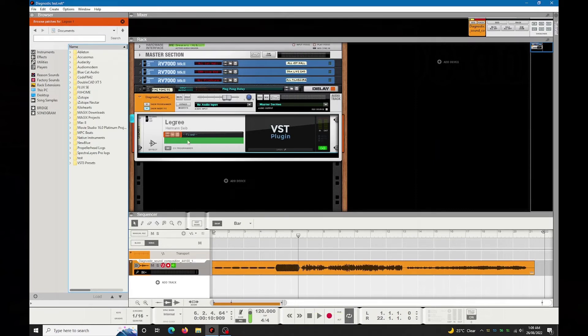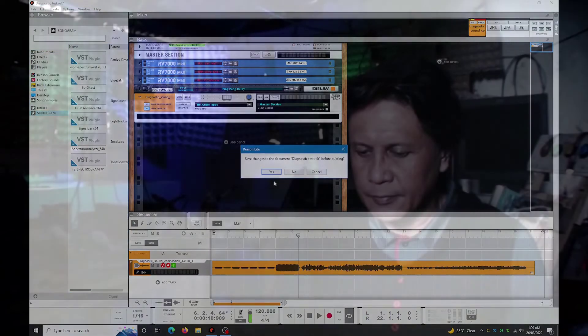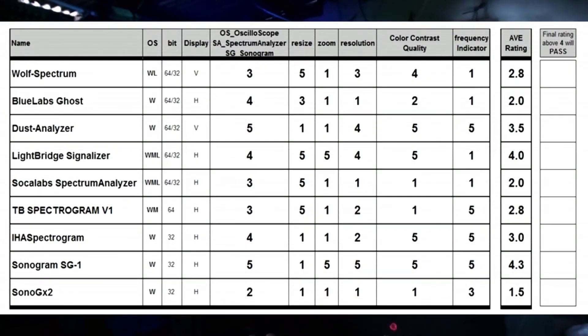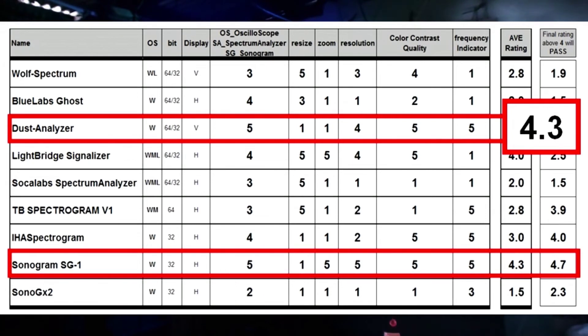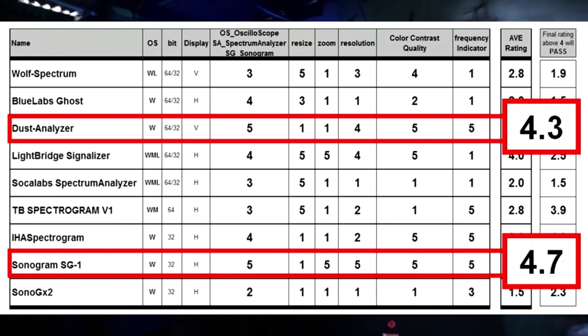Let's now check all the ratings. So now we have the scores. I want to emphasize that the frequency indicator is the most important criteria. The Dust Analyzer has a final score of 4.3 and the Sonogram SG-1 has a final score of 4.7. Dust Analyzer and Sonogram SG-1 are my two favorite sonogram VSTs.